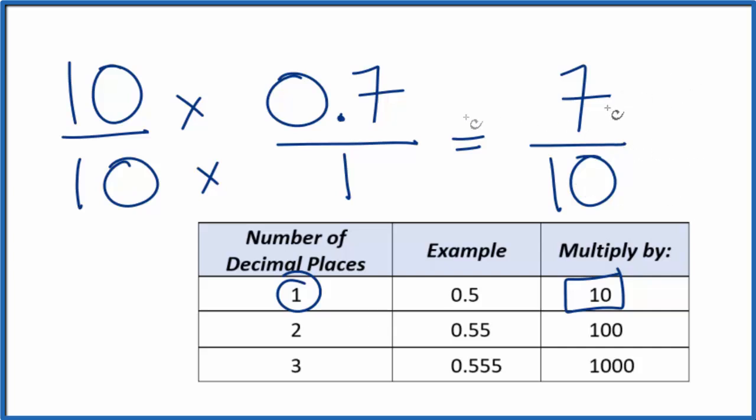We can't reduce this any further. So the decimal 0.7 is the same thing as the fraction 7 tenths. They have the same value. If you divide 7 by 10, you'll get 0.7.